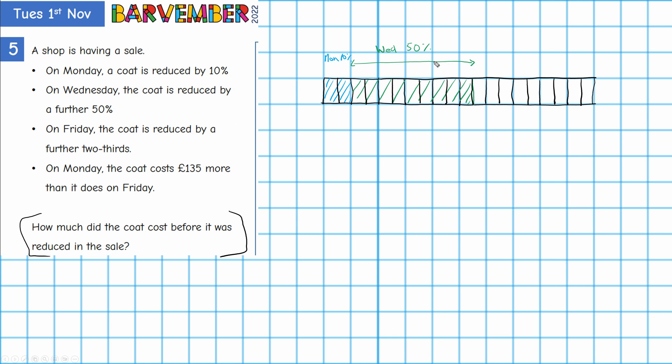Okay so that's Wednesday. What happened on Friday? Well on Friday the coat is reduced by a further two-thirds. So let's have a look. We've got one, two, three, four, five, six...